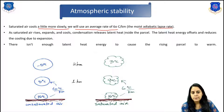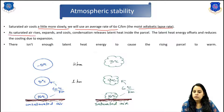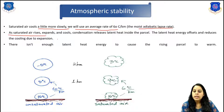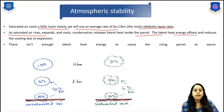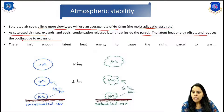Saturated air cools more slowly — we can use an average rate of 6 degrees Celsius per kilometer, which is the moist adiabatic lapse rate. As saturated air rises, it expands and cools. Condensation releases latent heat inside the parcel. The latent heat energy offsets and reduces the cooling due to expansion.